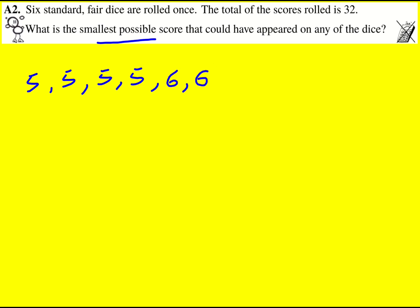Now we want the smallest score, so let's make the first die as small as possible. That means I'm going to have to make all the rest as large as possible. I could add one to these fives to make them sixes.